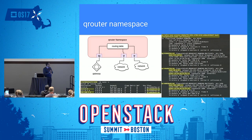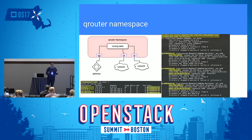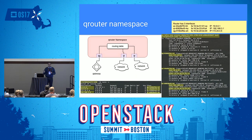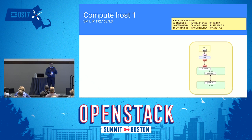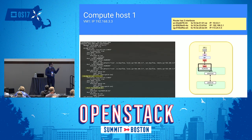Running `route -n` inside the router namespace shows destination networks routed via their respective QR interfaces, with the default gateway going through QG to the public network. The router has three interfaces in this example: two QR interfaces and one QG interface, each with specified IPs. Traffic from Compute Host 1 arrives via a dedicated tunnel to the network node, gets routed inside the QRouter namespace, and is forwarded to the correct compute host.